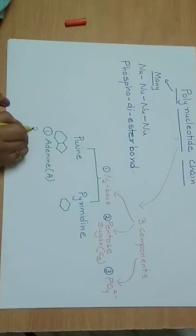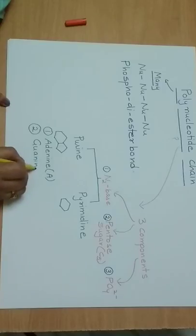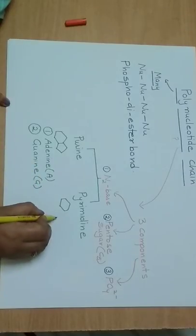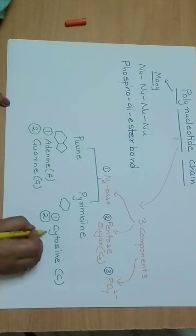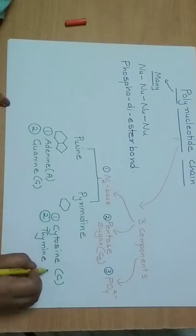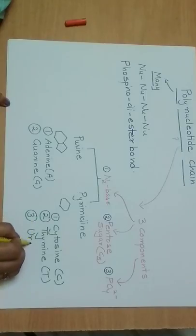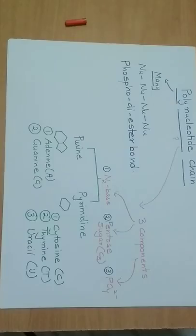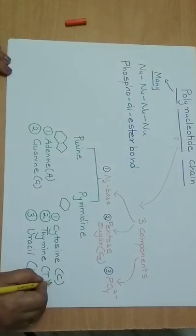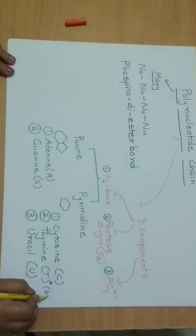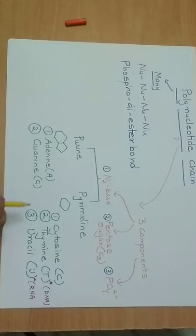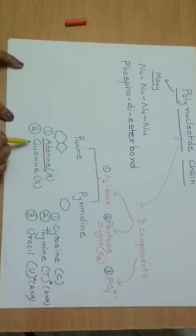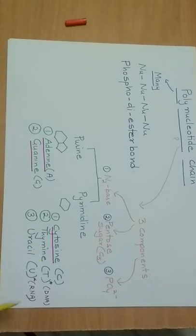The purines are adenine and guanine. The pyrimidines are three types: cytosine, represented by capital C; thymine, represented by capital T; and uracil. Thymine is found only in DNA, and uracil is found only in RNA. The remaining three — adenine, guanine, and cytosine — are common to both DNA and RNA.